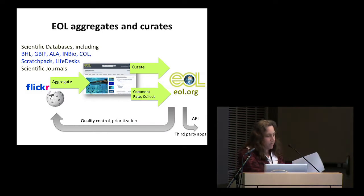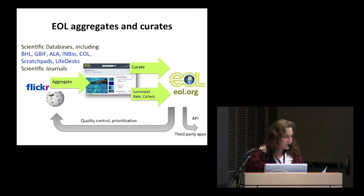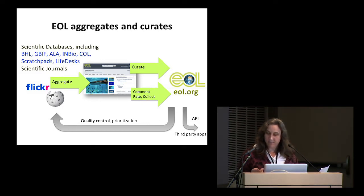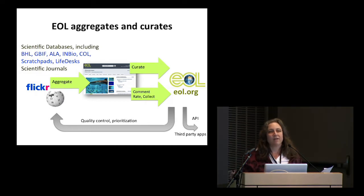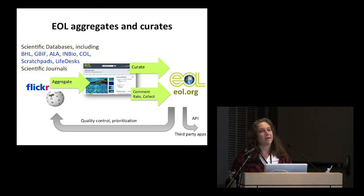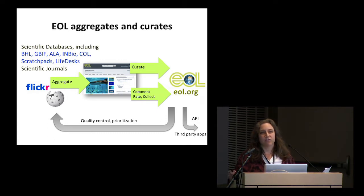This is a diagram of how EOL works. We get information from over 200 sources. Most of those are scientific databases, but some of them are sources like Flickr and Wikipedia. Those all come onto organism pages on the Encyclopedia of Life, where they're subject to curation by credentialed scientists. They're also able to get feedback, comments, and ratings from the general public.